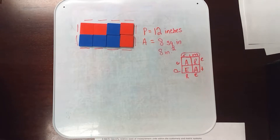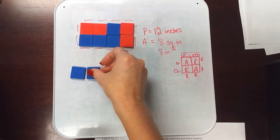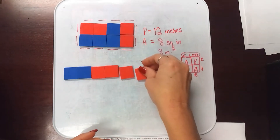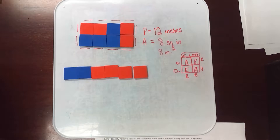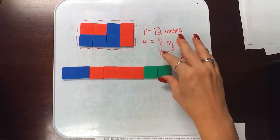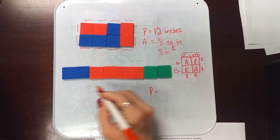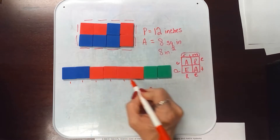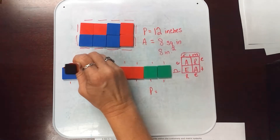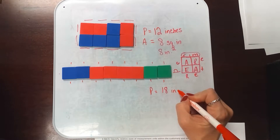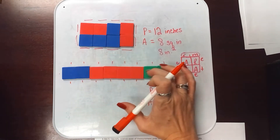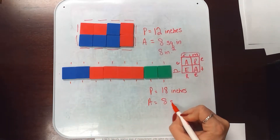Then I have students create another rectangle using color tiles. Perimeter here: 1, 2, 3, 4, 5, 6, 7, 8, 9, 10, 11, 12, 13, 14, 15, 16, 17, 18 — 18 inches. And the area is 1, 2, 3, 4, 5, 6, 7, 8 square inches.